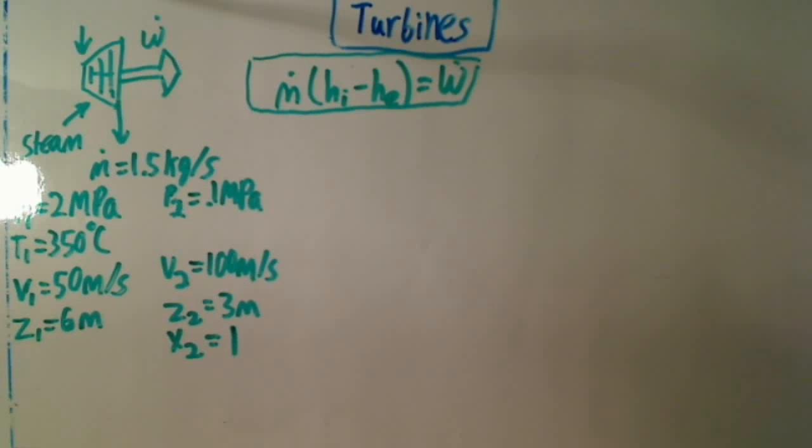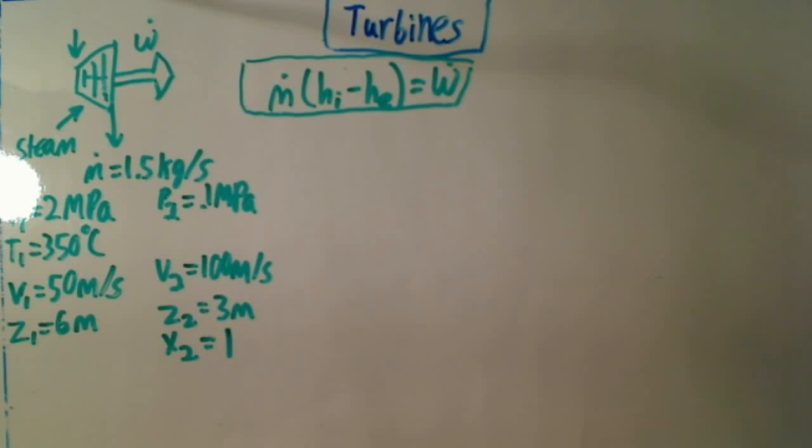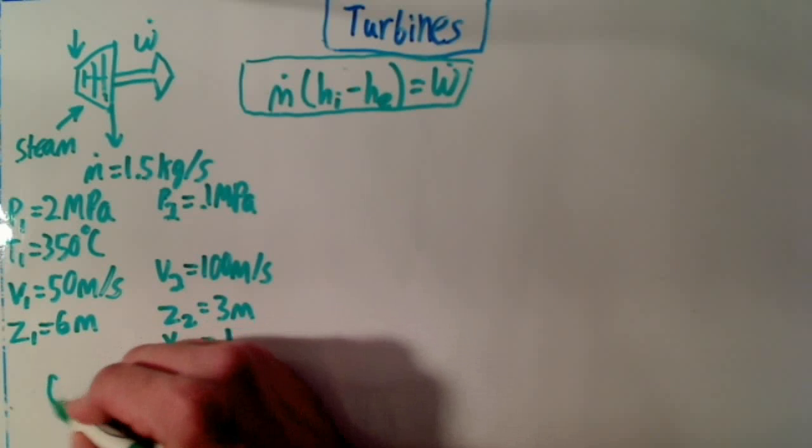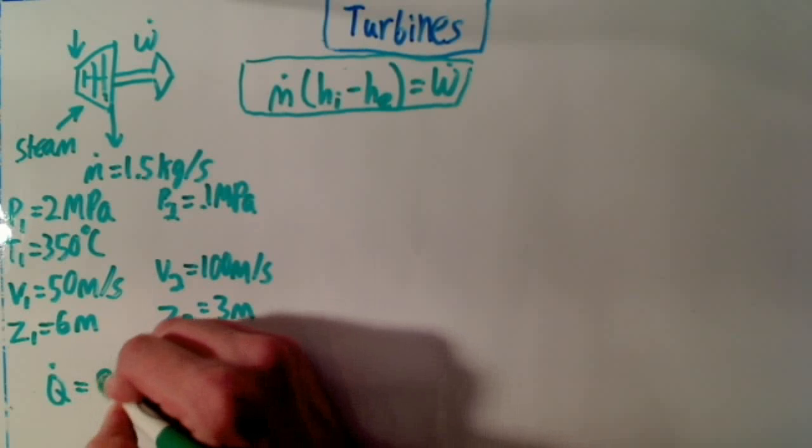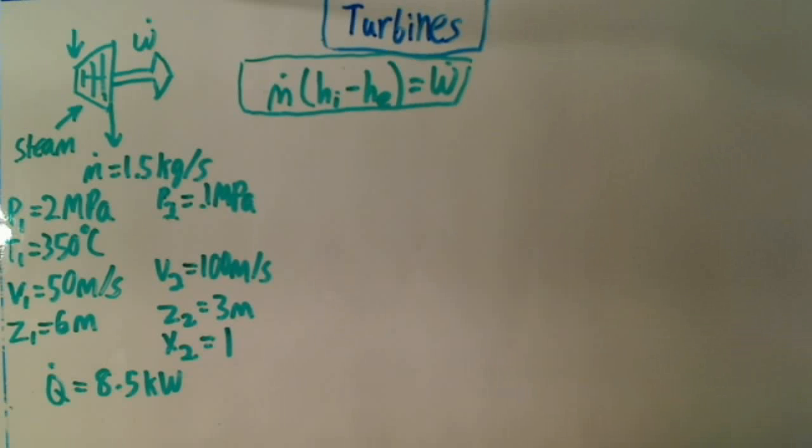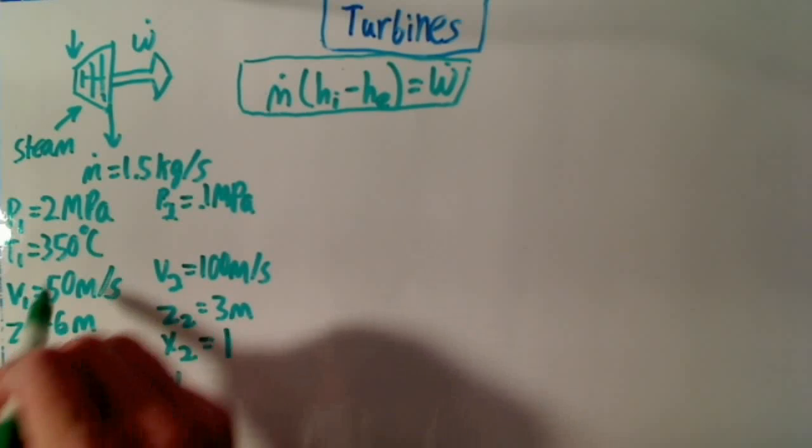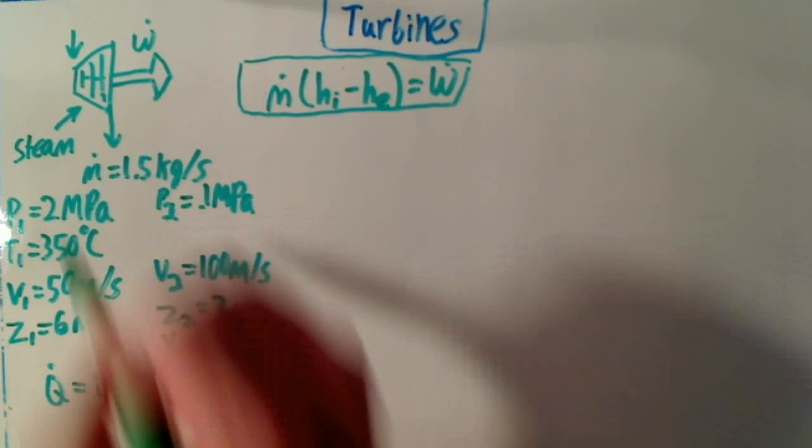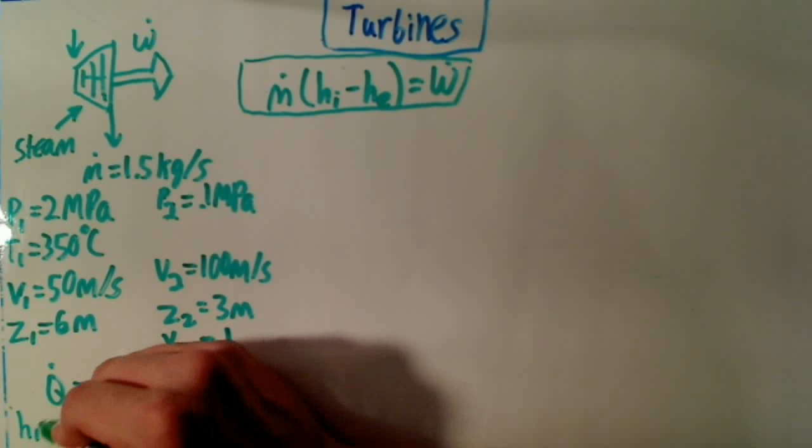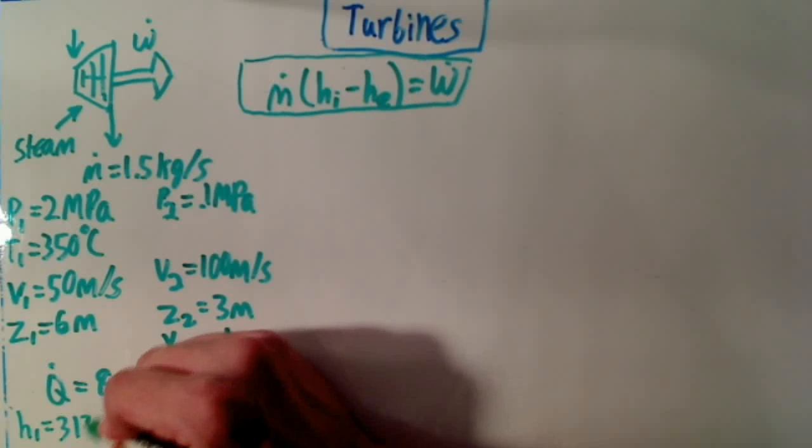Let me get my hand out of the way there. Oh yes, and there's also a heat transfer of 8.5 kilowatts, which is just a kilojoule per second. So let's start solving this. State 1 is a superheated gas. So we go to the superheated tables and find that its enthalpy is 3,130.